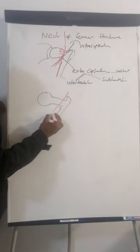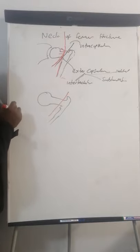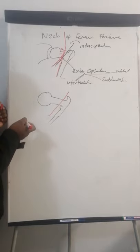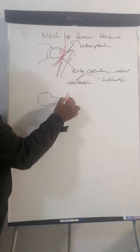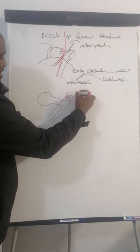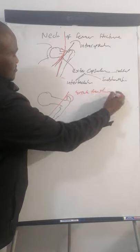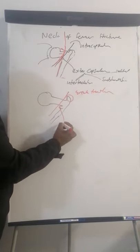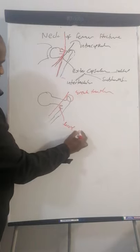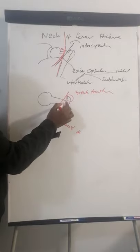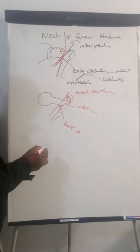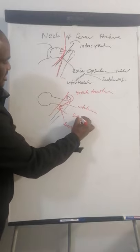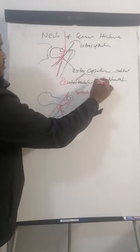Anything above the capsular line is an intracapsular fracture, and anything below is an extracapsular fracture. So if you only fracture the greater trochanter, that's an isolated greater trochanter fracture. If you only fracture the lesser trochanter, that's an isolated lesser trochanter fracture. A fracture connecting both trochanters is an intertrochanteric fracture, and a fracture below the lesser trochanter is a subtrochanteric fracture.